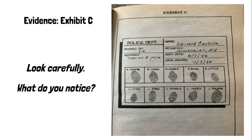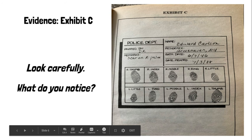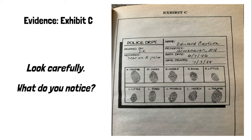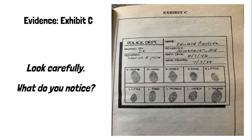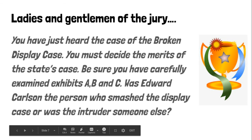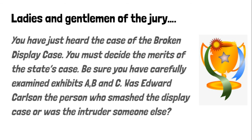Defense claims that since the principal never saw the intruder drop a bowling pin as he chased him, there was no way to prove the pin on the office floor was the object used to break the display case. The state claims that since the bowling pin found on the office floor bears the fingerprints of Edward Carlson, it is logical to conclude that he was the intruder and that he dropped the pin as he was chased by the principal. Ladies and gentlemen of the jury, you have just heard the case of the broken display case. You must decide the merits of the state's claim. Be sure to examine carefully the evidence — Exhibits A, B, and C. Was Edward Carlson the person who smashed the display case, or was the intruder someone else?